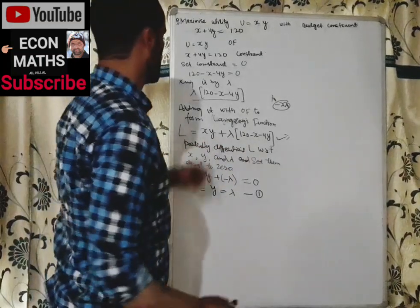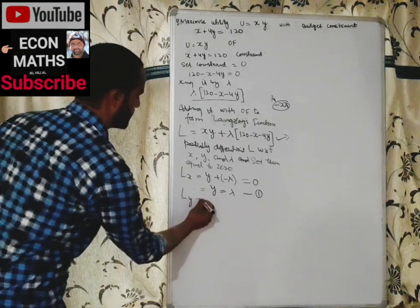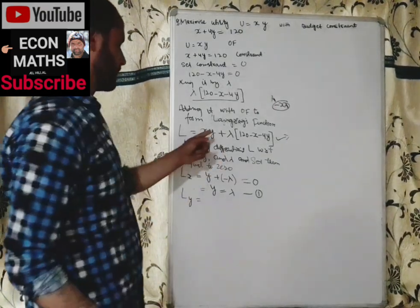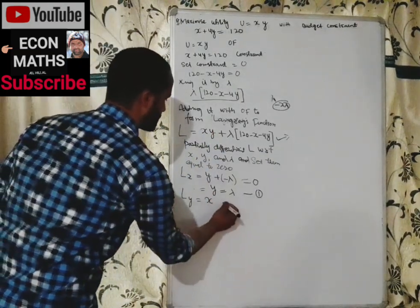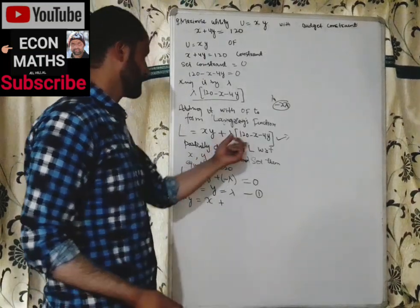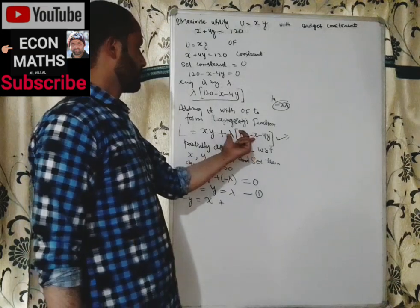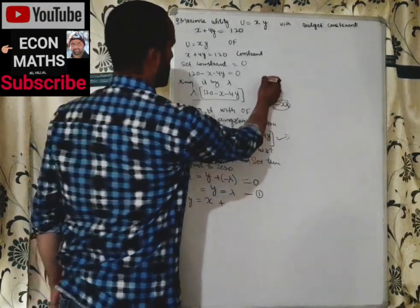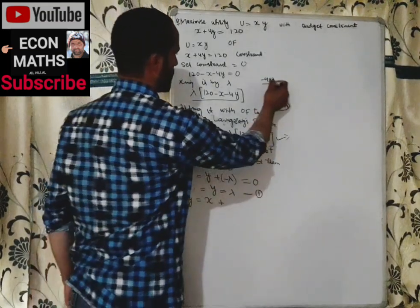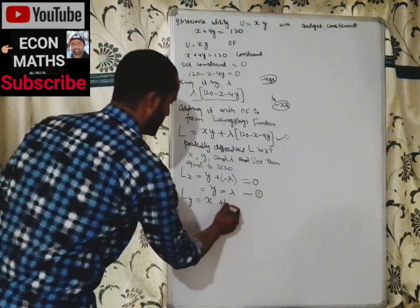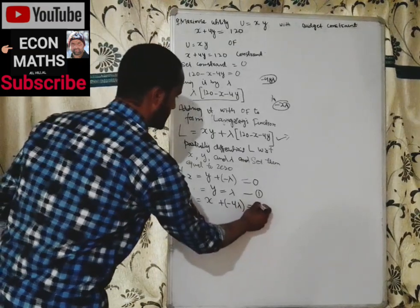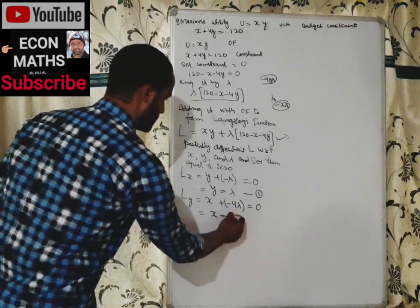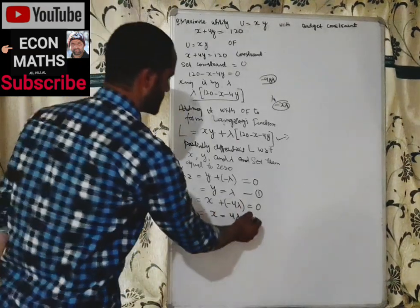Similarly, partially differentiating L with respect to y: the derivative of x·y with respect to y is x; the derivative of λ·120 is 0; the derivative of −λx is 0; and the derivative of −4λy is −4λ. So L_y = x − 4λ = 0, giving Equation 2: x = 4λ.